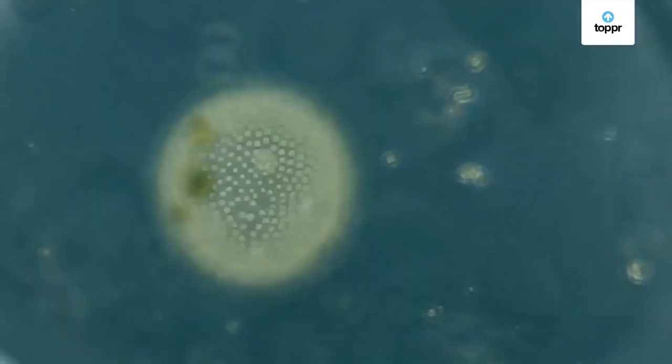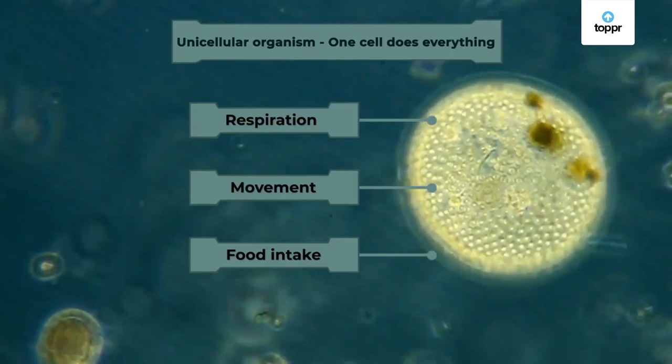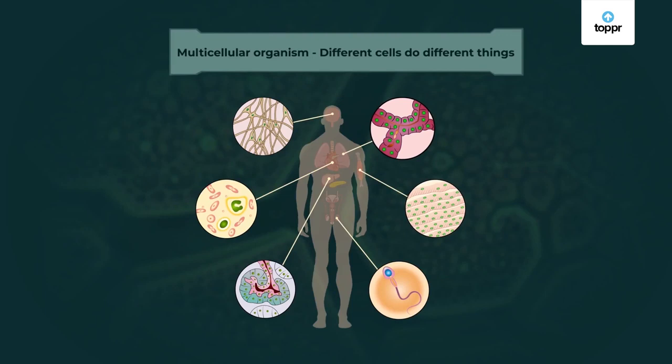Unicellular organisms are amazing — a complete organism made of just a single cell, and this single cell does everything: respiration, movement, food intake, all by itself. It's kind of the jack of all trades. But in multicellular organisms, things work a little differently. Instead of a single cell doing everything, different cells do different things — some cells take care of respiration, some take care of food uptake, and so on.